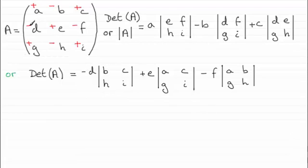Remember, though, that we have got a negative sign associated with this element d. So it's going to be minus d. We would draw a line vertically through the d and horizontally. And that leaves us with the elements b, c, h, and i to work out that determinant.